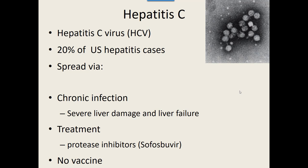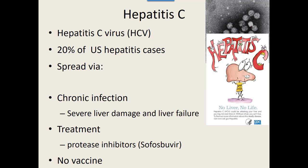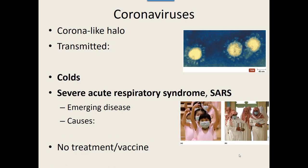Our last remaining virus group has a different shape. It's still enveloped, still positive-sense single-stranded RNA, but it's the Coronaviridae group — the coronaviruses. They're named 'corona,' not for the beer, because corona means crown. They apparently think that the little protein spikes on the outside look kind of like a crown, giving it a crown-like halo on the outside.